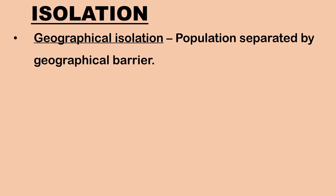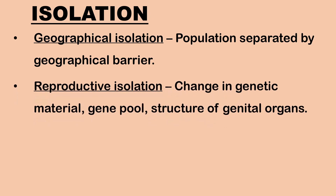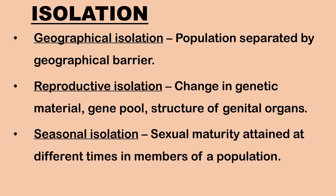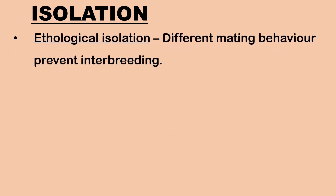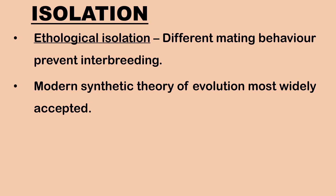These groups, under different environmental factors, acquire variations and are processed by natural selection. Reproductive isolation between two populations occurs due to changes in genetic material and gene pool structure. In seasonal isolation, interbreeding is not possible because sexual maturity is attained at different times in the members of a population. In ethological isolation, different mating behaviors among the members of two populations prevent interbreeding. Modern Synthetic Theory of Evolution is the most widely accepted theory of evolution.